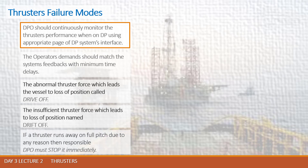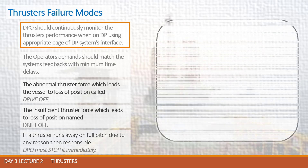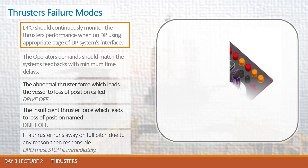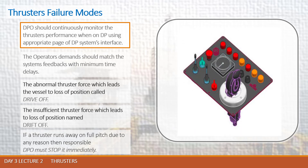At any DP bridge we have an emergency shutdown panel responsible for the emergency stop of a desired thruster — probably the thruster which failed. Any DP vessel class 2 or 3 must have this panel near the DP console. If a thruster runs away on full pitch for any reason, we have only 20 seconds or less after failure to make the emergency action to stop the failed thruster.